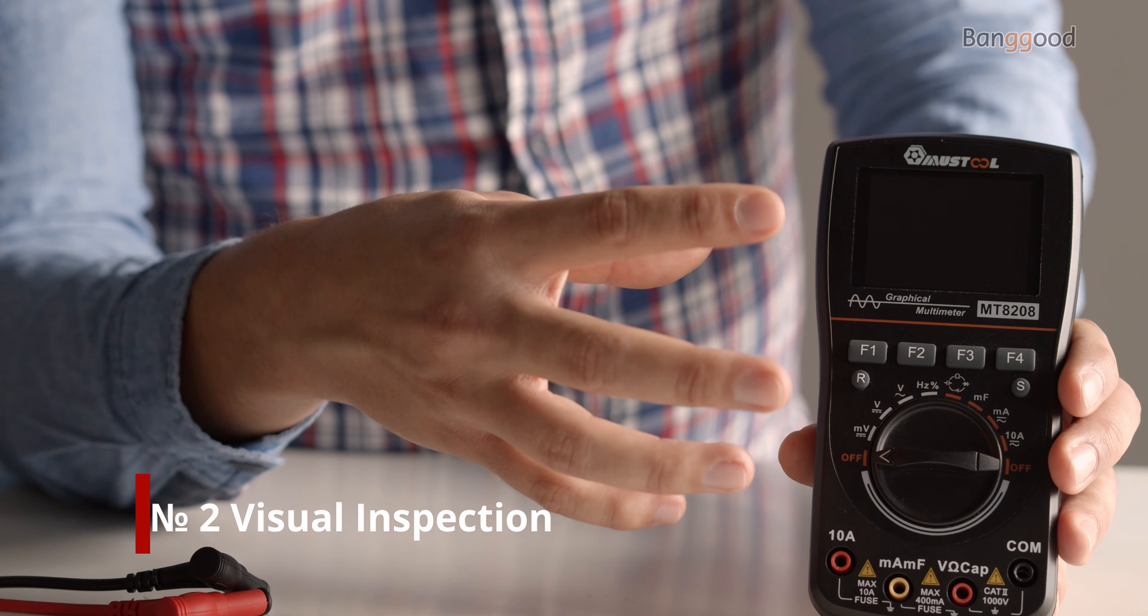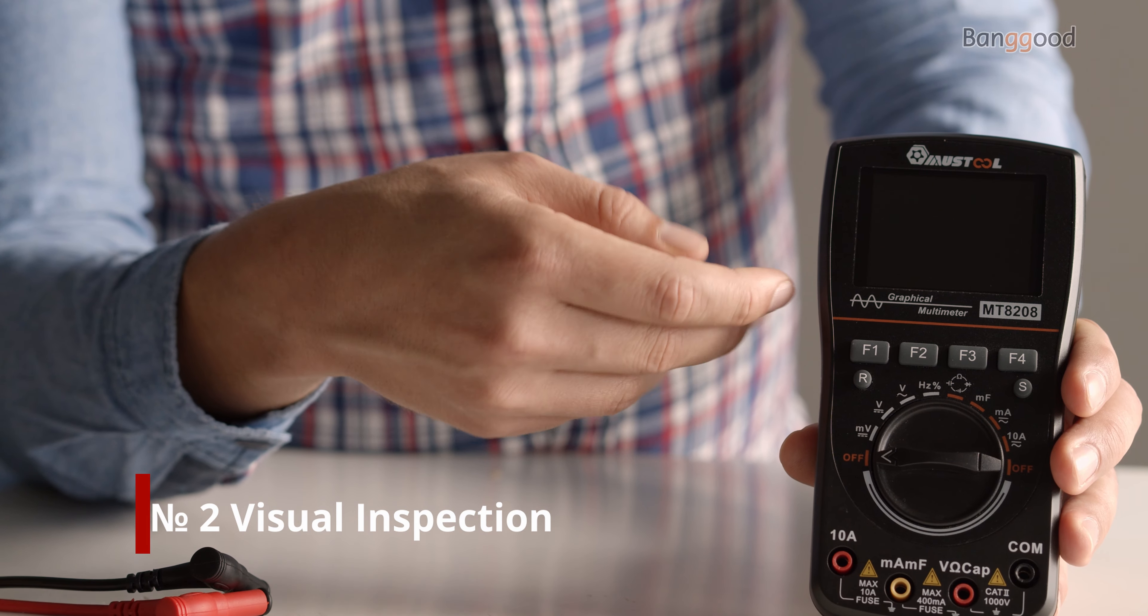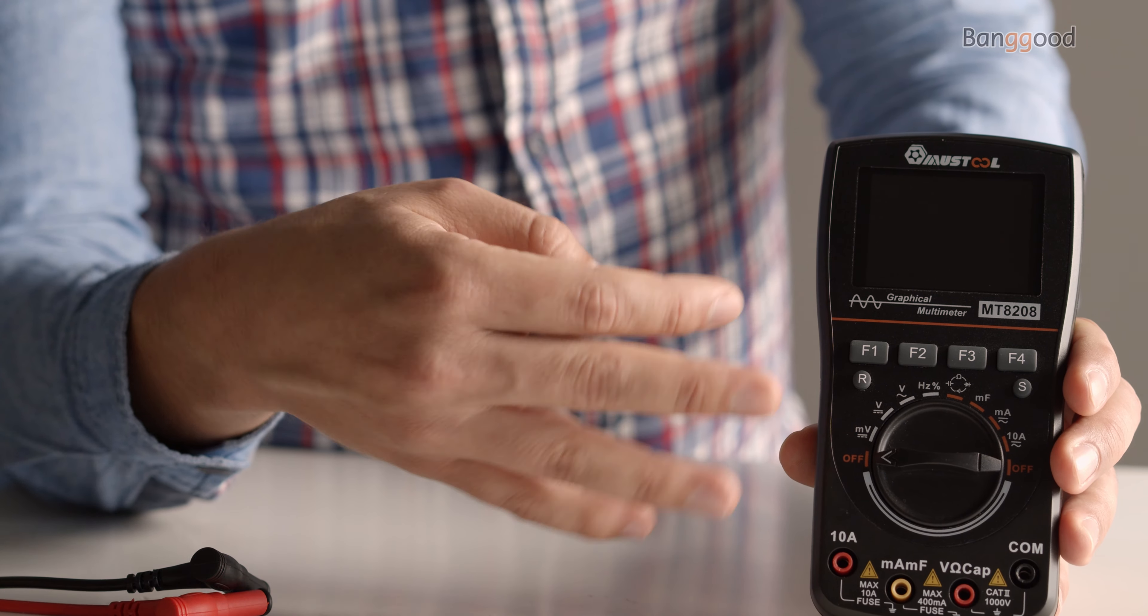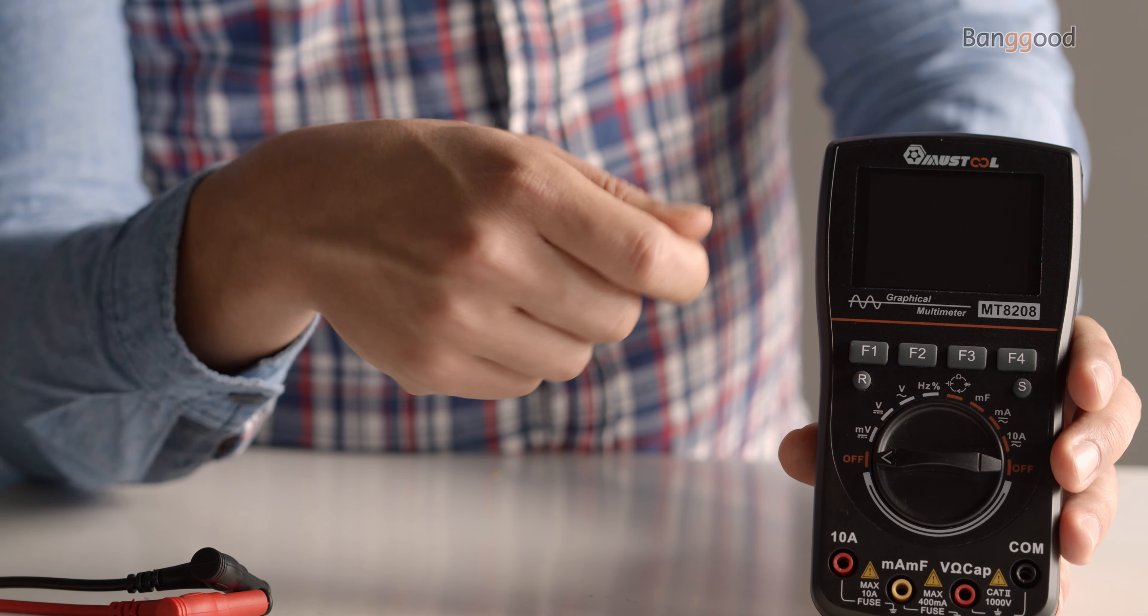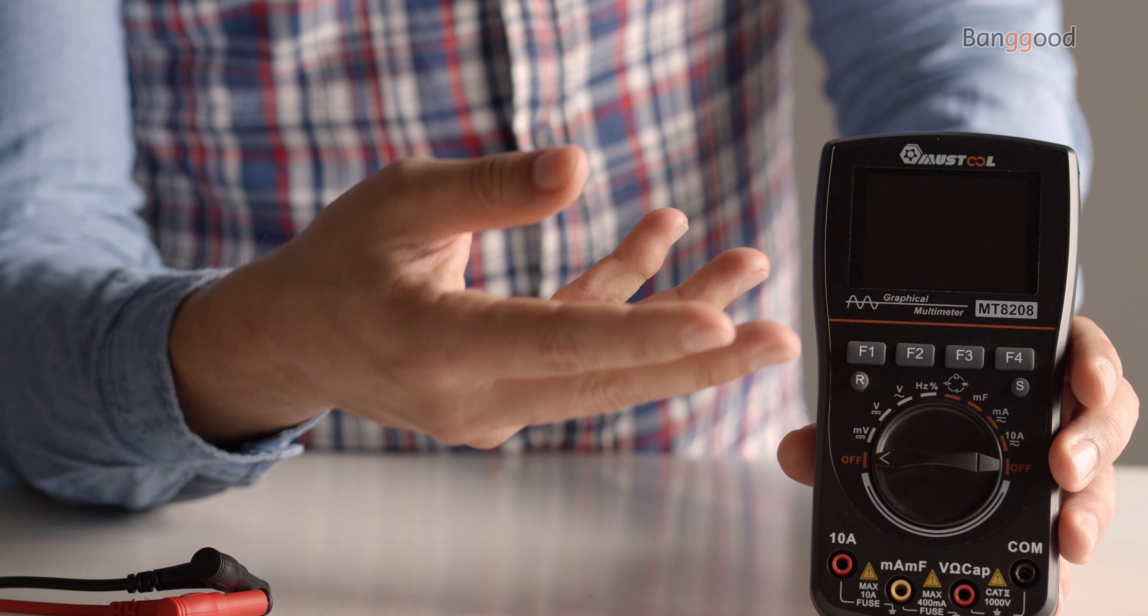Number two: a thorough visual inspection is one of the most important steps you can take to ensure your equipment is in good working condition. Before every use, you should do the following visual inspections.